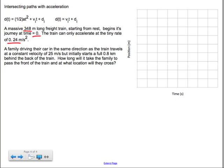And the train has this relatively small acceleration of 0.24 meters per second squared. The second object that's traveling is a car that is traveling at a constant velocity of 25 meters per second. However it starts behind the train.